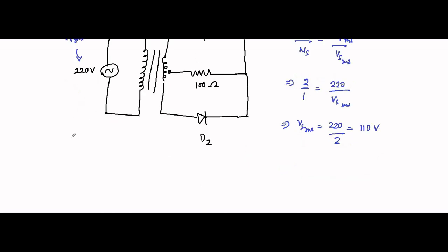The maximum value of the secondary winding voltage, VS_max, is equal to 110 × √2, which rounds to 156V.